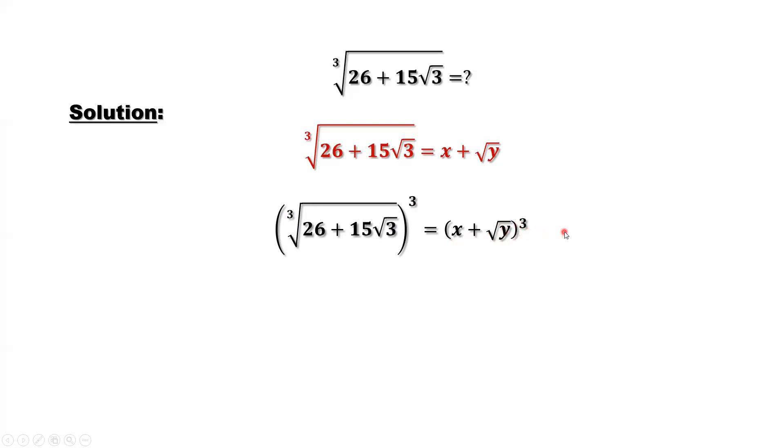We use the binomial formula. This is our left-hand side, 26 plus 15 times square root of 3. Right-hand side, that's x to the power of 3, plus 3 times x to the power of 2 times square root of y, plus 3xy, plus y times square root of y.